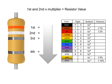In this example, the first band is orange, so the first digit is 3. The second band is white, so digit 2 is 9. The third band is silver, so we multiply the first two numbers by 10 to the negative second power, or 0.01.